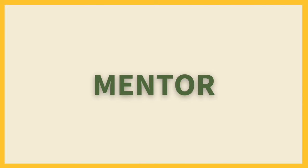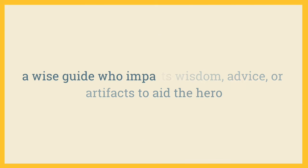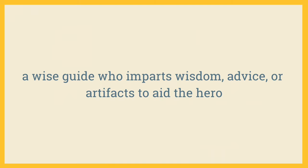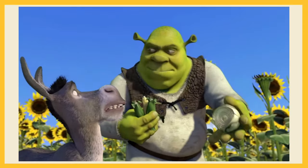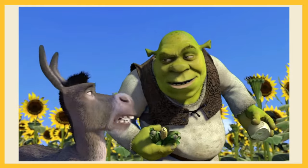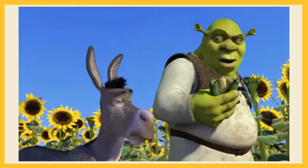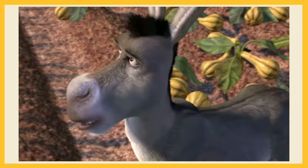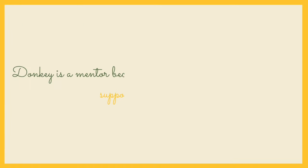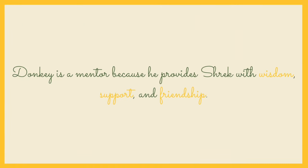We have a mentor — a wise guide who imparts wisdom, advice or artifacts to aid the hero. Donkey is Shrek's loyal sidekick. He is a talkative, optimistic and always hungry donkey who loves to make Shrek laugh. Donkey is a mentor because he provides Shrek with wisdom, support and friendship.